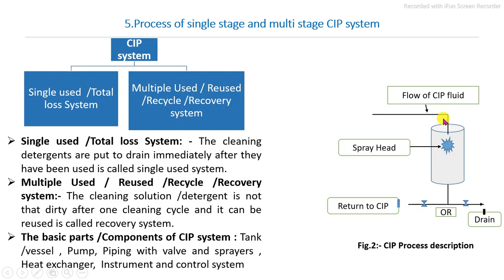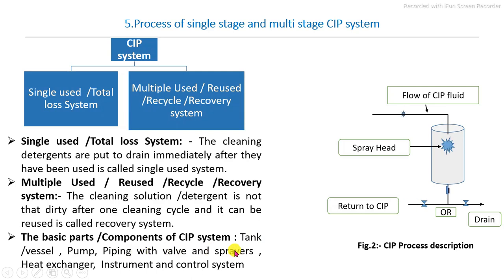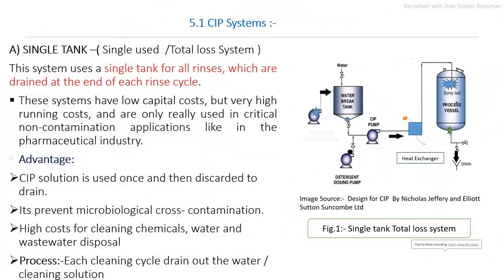The main parts involved in the CIP system are the acid tank, alkaline tank, and water tank as the main tanks, then the pumping system, piping system, valves, sprayers, heat exchangers, and complete instrumentation and control for automatic operation.